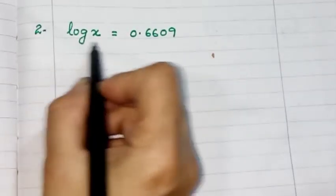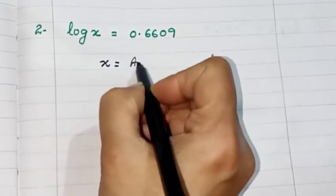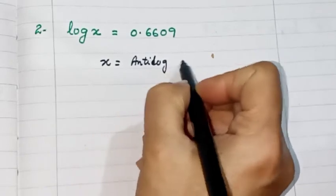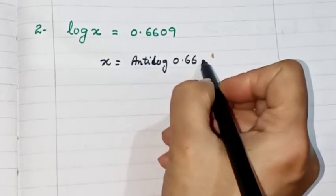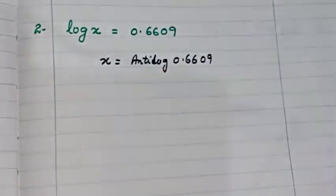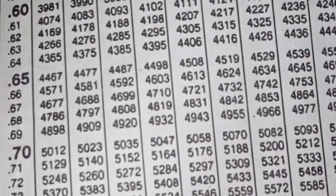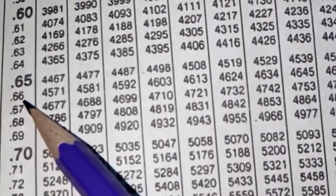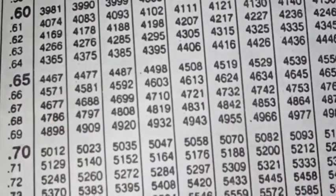Now we are doing question number 2 of exercise 3.5. We write x equals anti-log of 0.6609. To find this, we go to the anti-log table and search for row 0.66, then column 0. The value there is 4571.